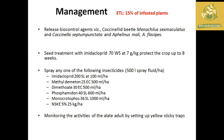The economic threshold level for aphids is 15% of infested plants. For biocontrol, release of parasitoids like coccinellid beetles, Aphelinus mali, and Menochilus sexmaculatus can control aphids. Seed treatment with imidacloprid 70 WS at 7 g per kg can protect the crop up to 8 weeks. Insecticide sprays include imidacloprid, methyl demeton, dimethoate, phosphamidon, monocrotophos, and neem seed kernel extract. Monitoring with yellow sticky traps is also effective.